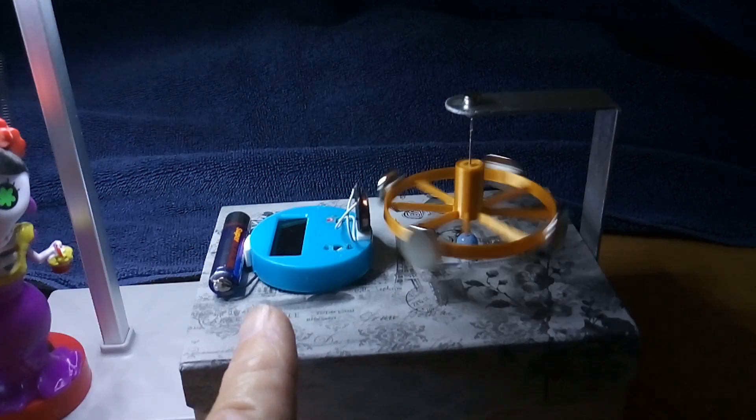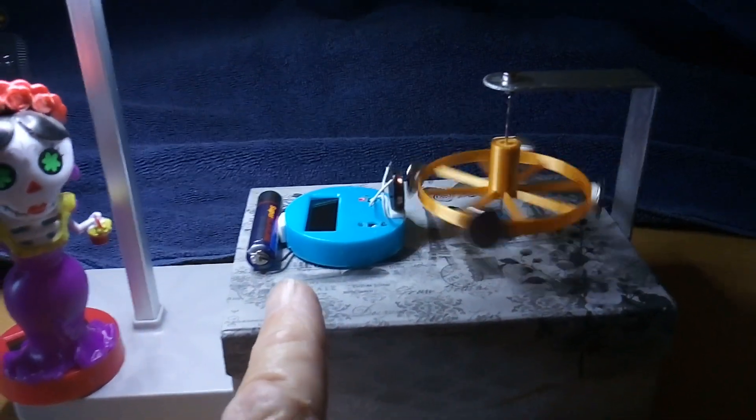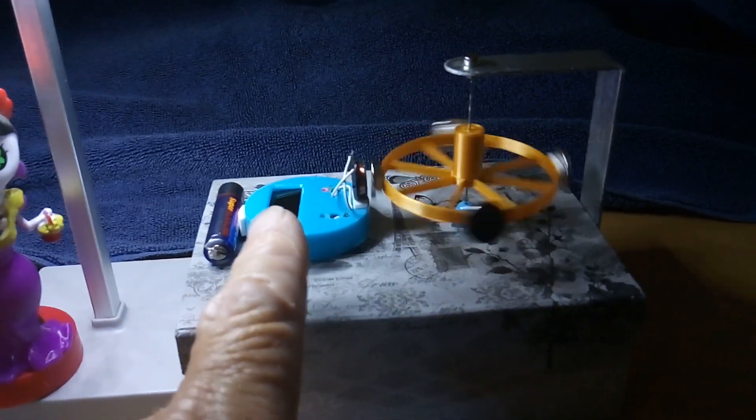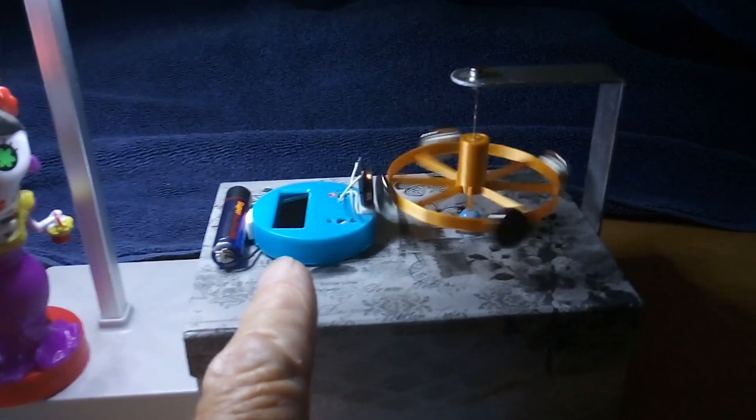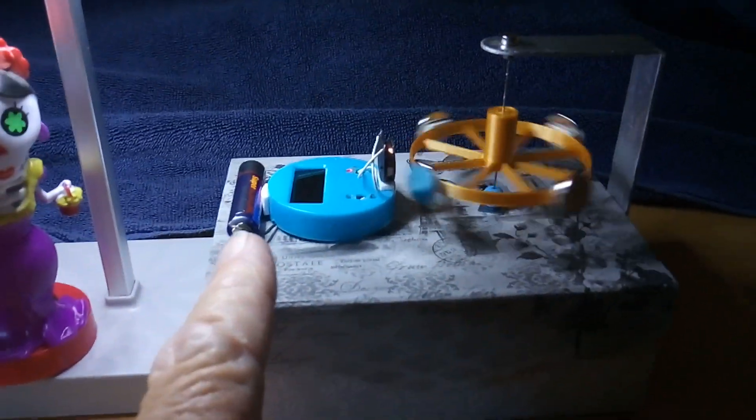The amp draw goes up during the night. During the day when the sun hits the panel, it keeps running but the amp draw goes down. This will run for months on a little battery like that.